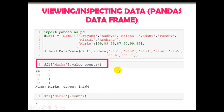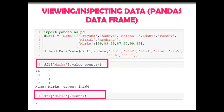Next, count. The count function returns the count of non-null values in each DataFrame column. We can also apply it on a specific column. So the output is 7 because our marks column contains 7 non-null values. Let me now show you these functions and attributes practically in the Jupyter Notebook.